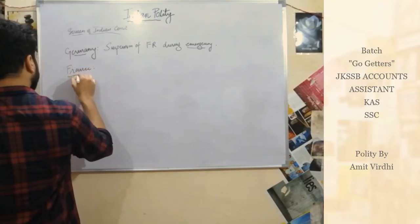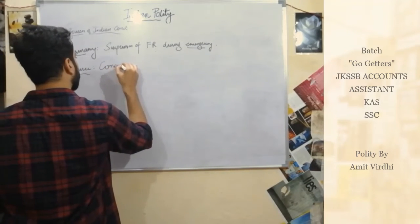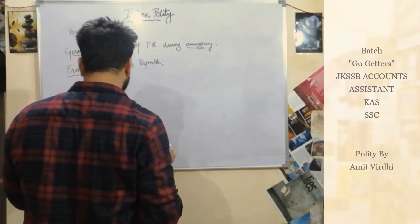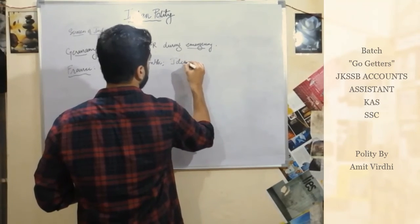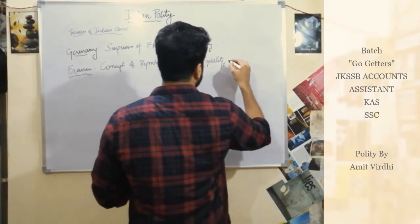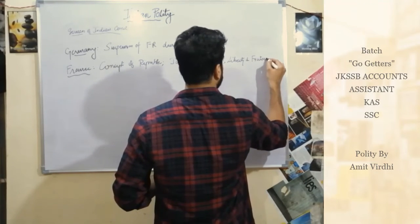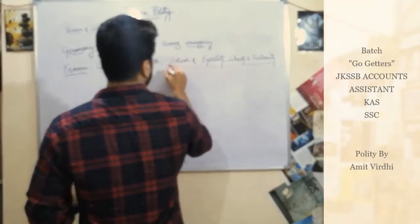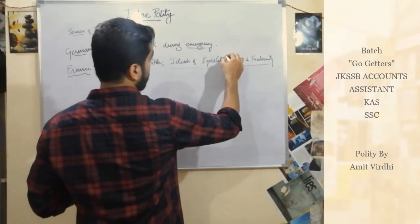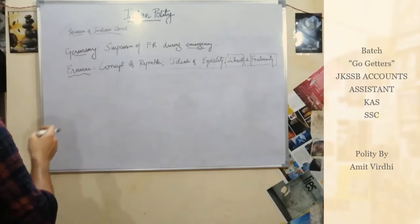From France we have taken the concept of republic — the republican form of government — and the ideals of equality, liberty, and fraternity. In the Preamble you find equality of status and opportunity, liberty of thought, expression, belief, and faith, and fraternity promoting brotherhood. These are drawn from France.